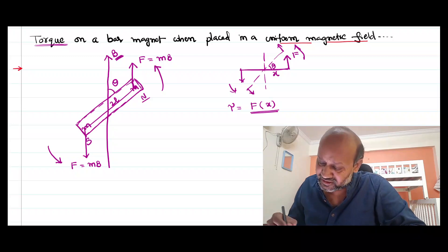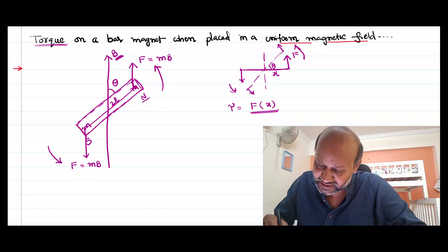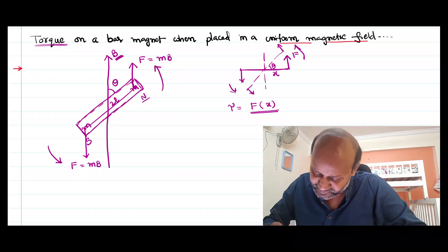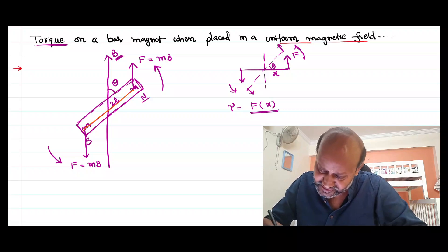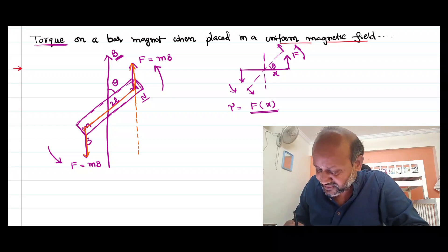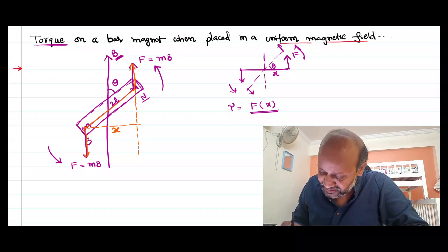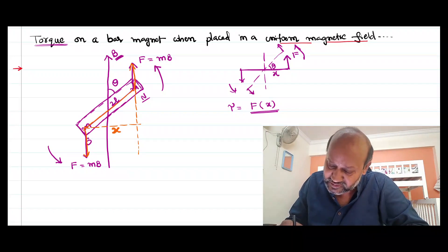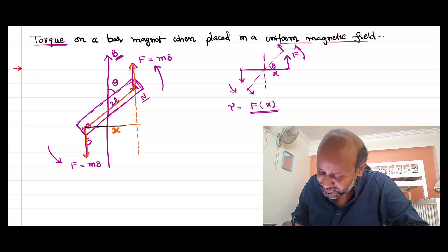So what is the torque in this case? Be careful to note that the length of the magnet is not the perpendicular distance between the two forces. This is force one — if I extend that force, it goes down like this. This is force two. So where is the perpendicular distance between them? I have to draw a perpendicular line. So this perpendicular distance is x. Between the two forces, that perpendicular distance is what I have to calculate.